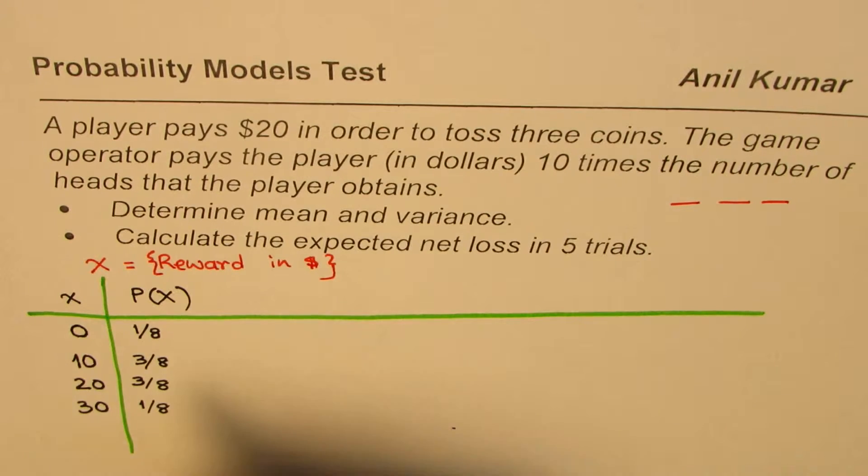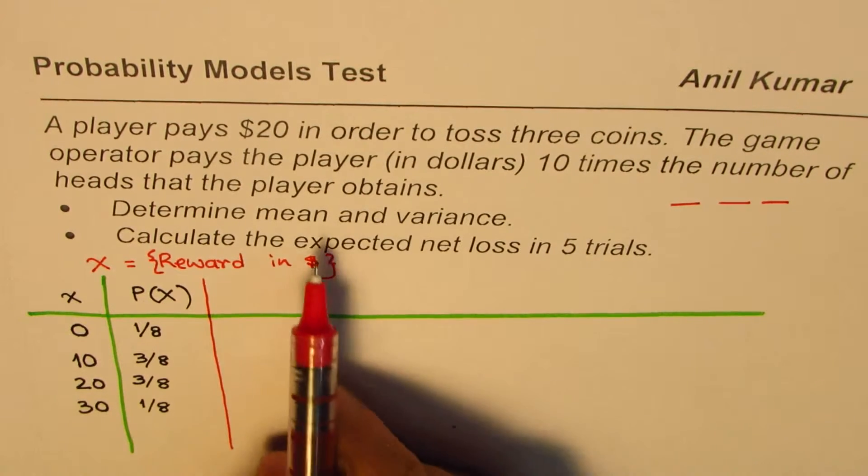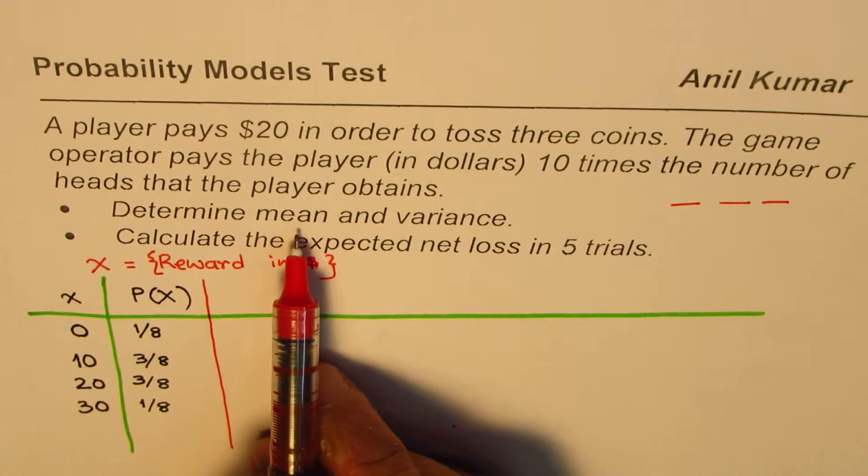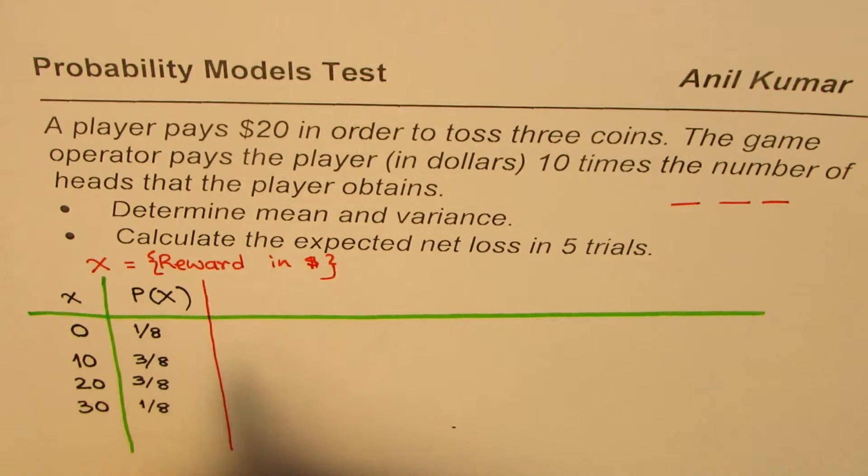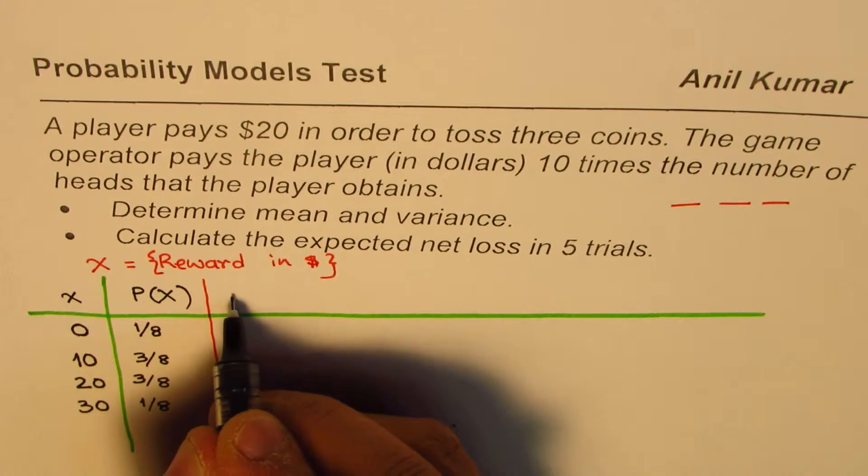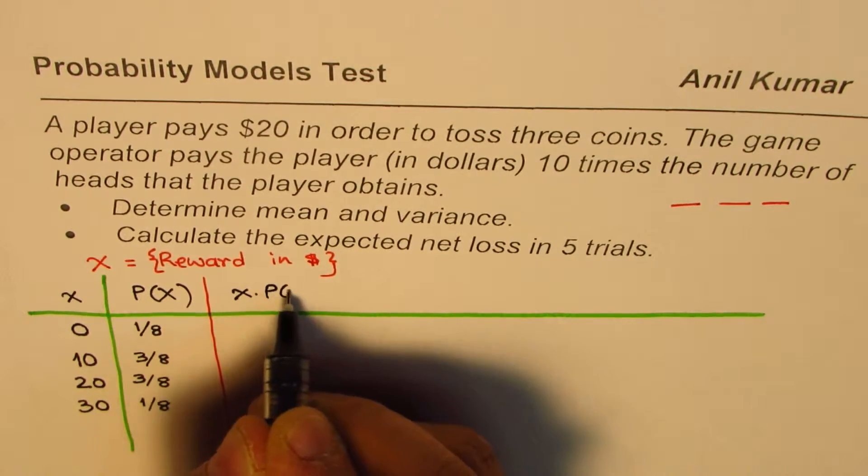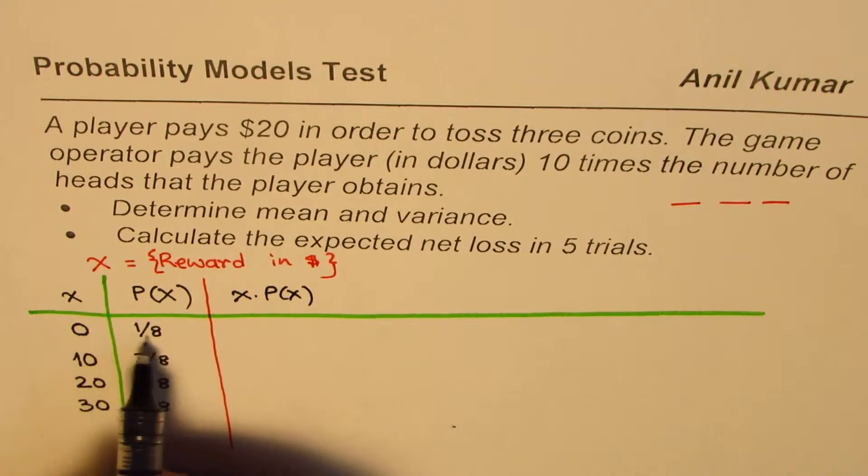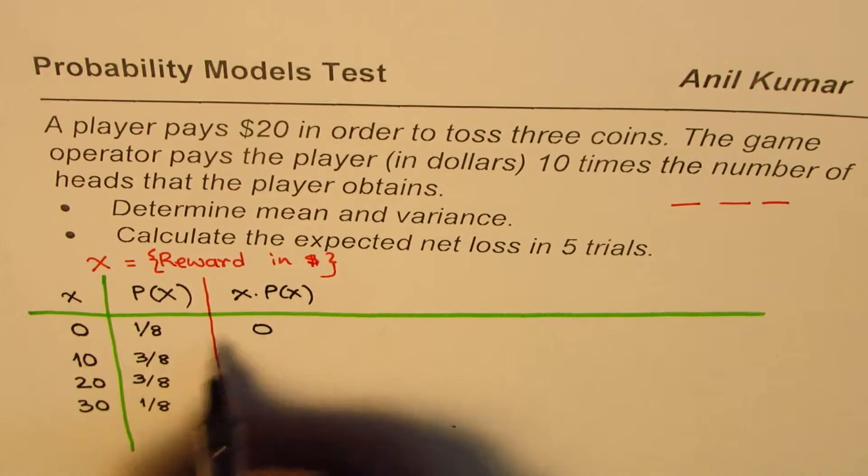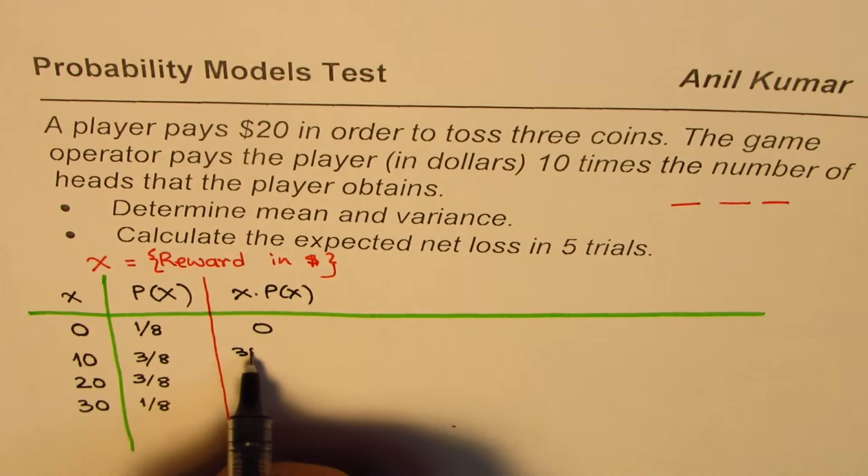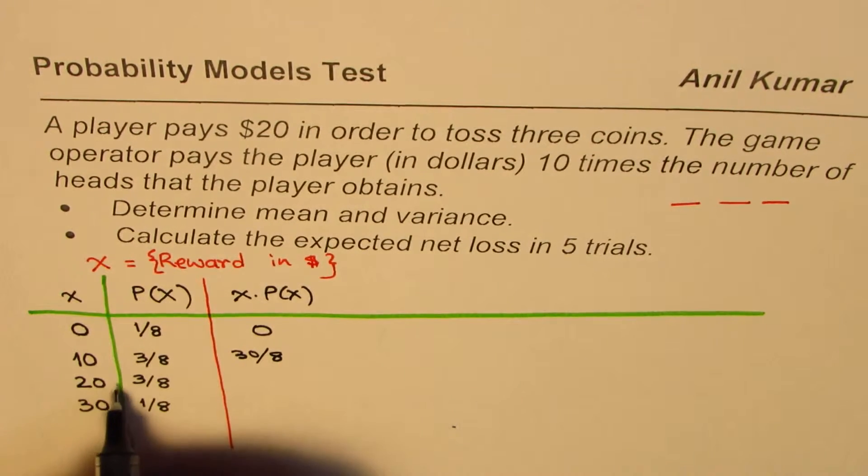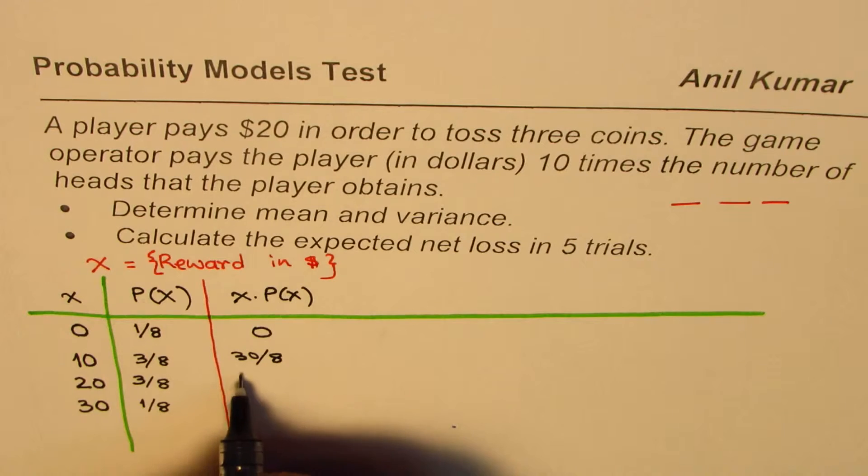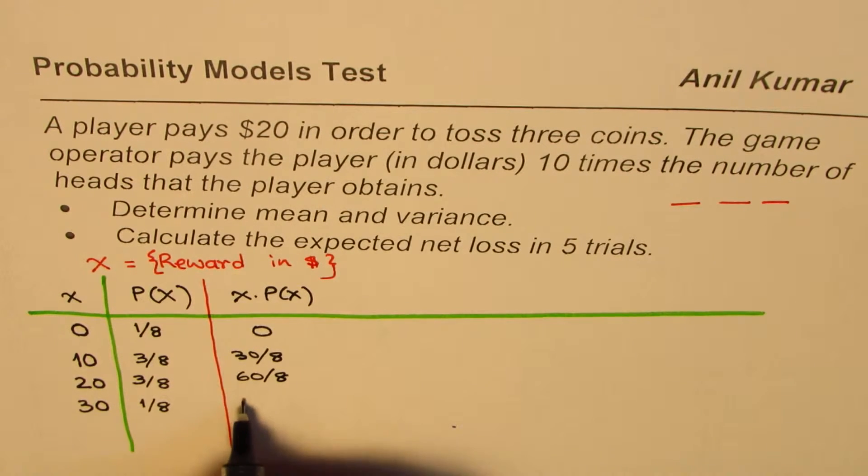Now, the next column is what do we need to find? We need to find mean and variance. So to find mean, or expected value, we'll multiply x times p of x. So when you multiply this quantity, you get 0. When you multiply times 10, you get 30 over 8. 20, 2 times 3 is 6, 60 over 8. 30 over 8. So these are the values.